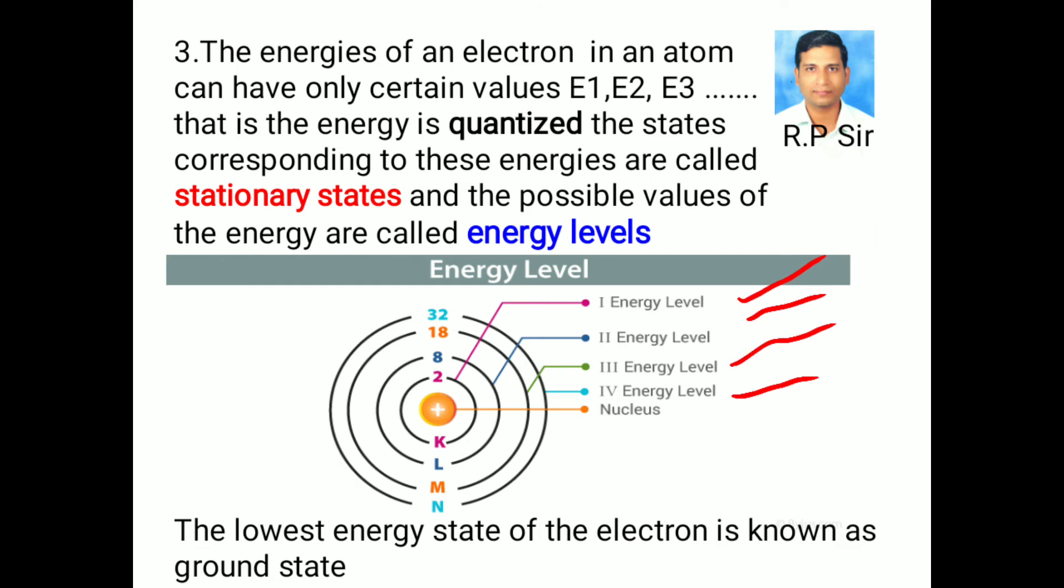The lowest energy state of the electron is called ground state. It is the first energy level, which is very close to the nucleus. As we move away from the nucleus, the energy increases.